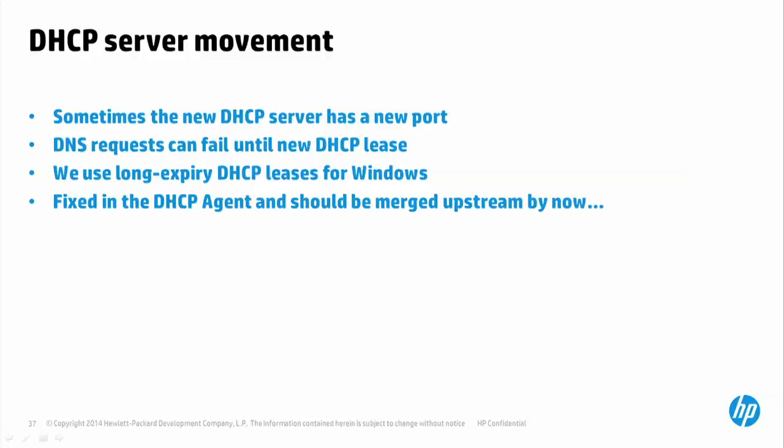Another issue: when failing over DHCP from one network node to another, occasionally a new port assignment occurs. This causes VMs using that IP for their DNS mask to lose DNS access until they renew their DHCP lease. With very long DHCP lease times in use, a machine could be without DNS for a significant period — for example, if the DNS IP address shifts from 10.0.0.2 to 10.0.0.3. Fixes have been upstreamed for this.